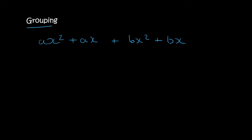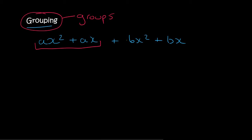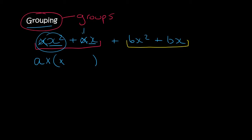So here we have a question that has four terms. With grouping, as the name suggests, you put them into groups. You take the first two and then the second two as a group. In the first two, the common factor is a, so that's taken out. There's also an x — one x here and two x's here — so we take out one x, leaving one x over here. There's nothing left from the other term, so we just say plus one.